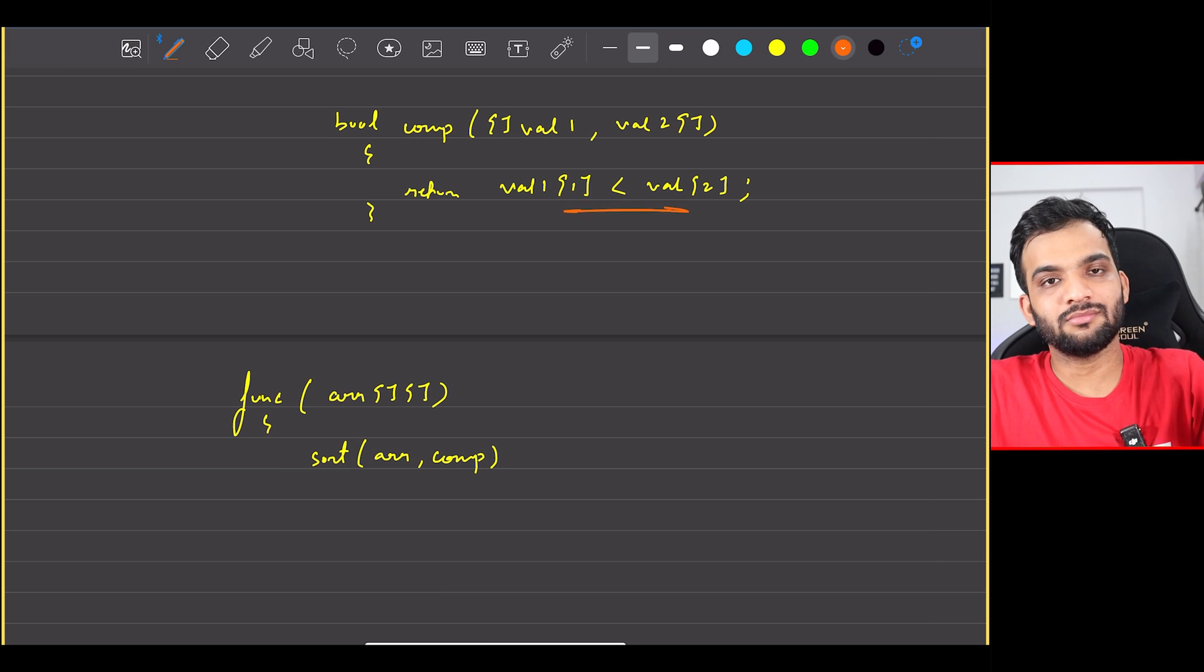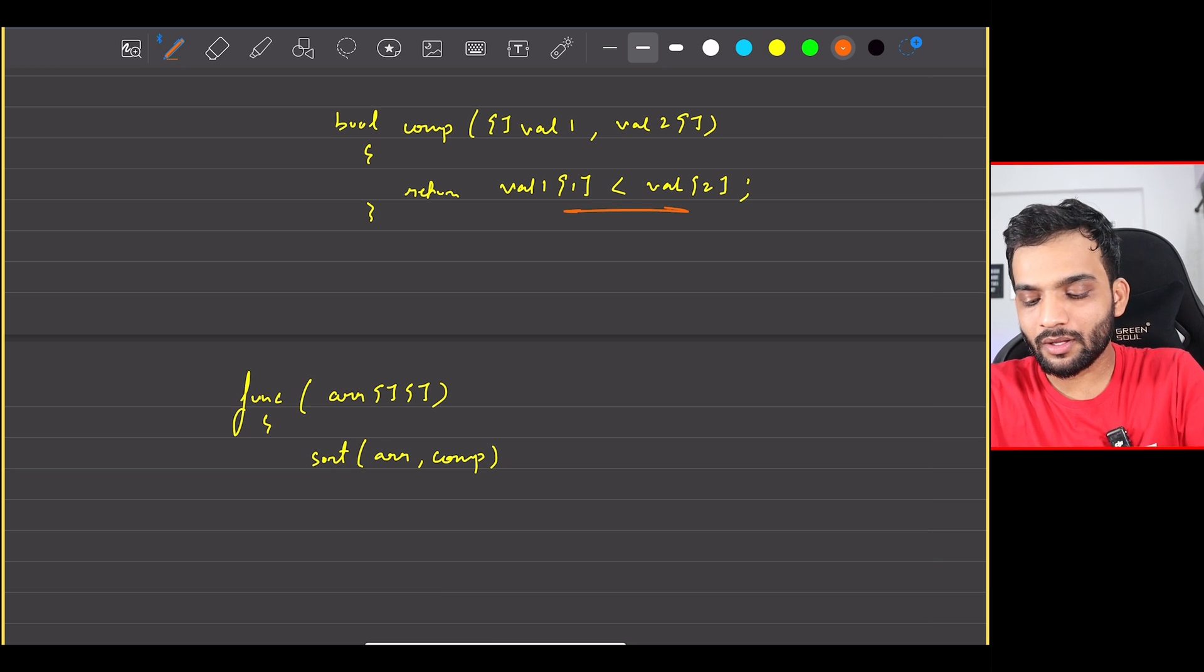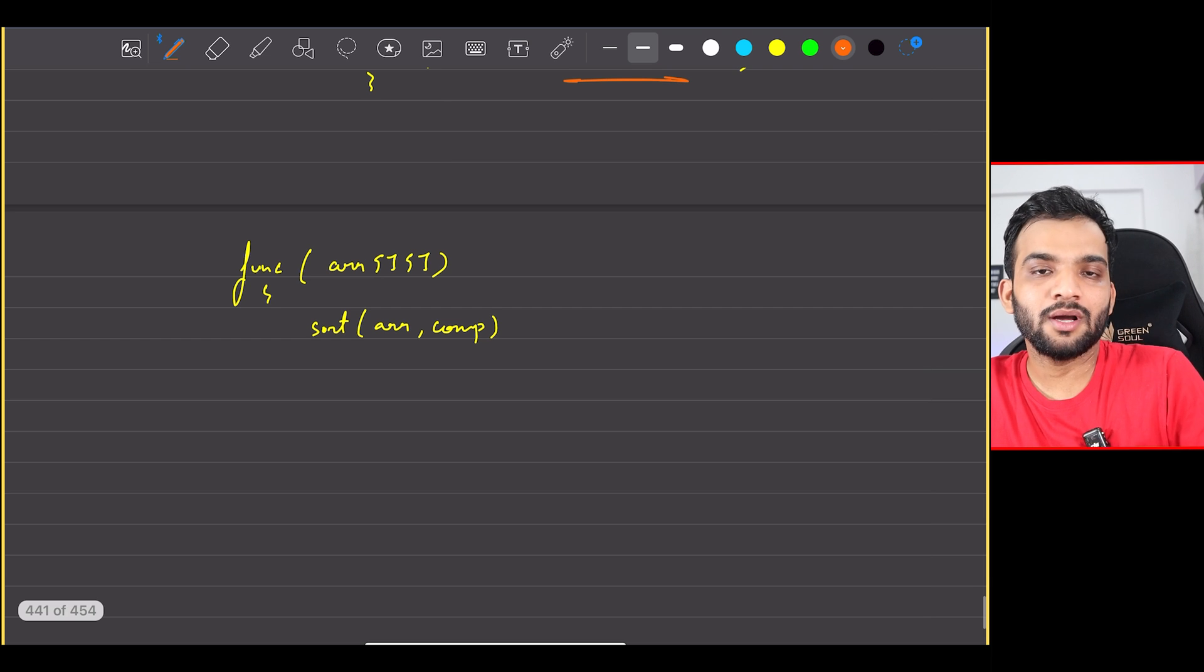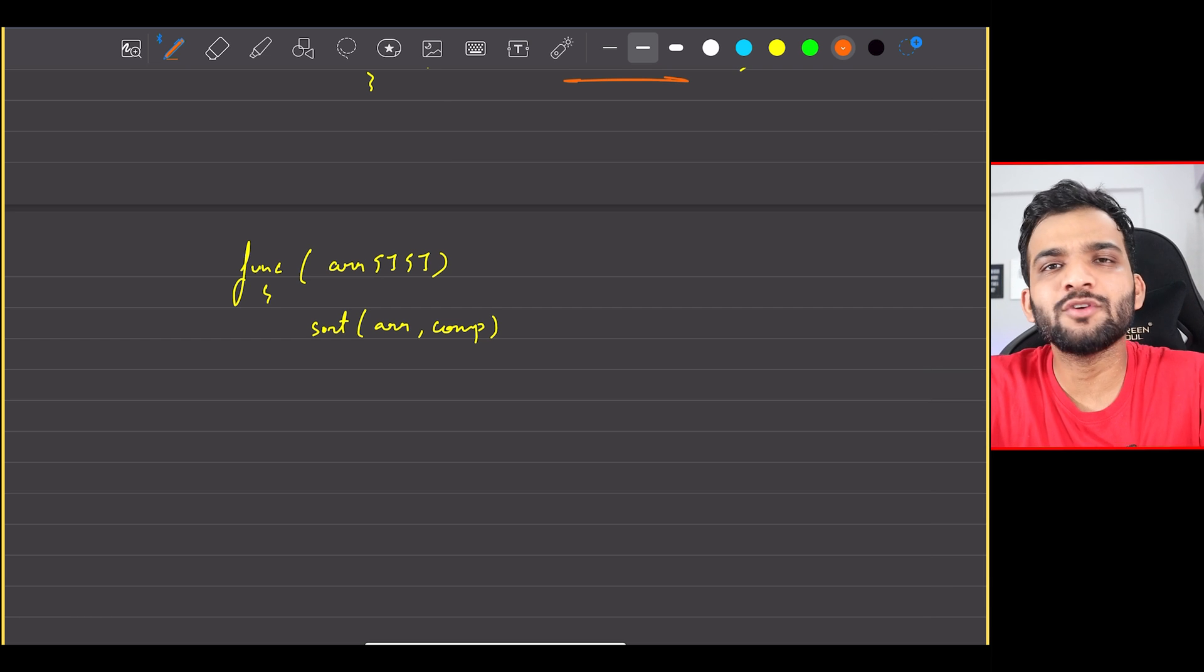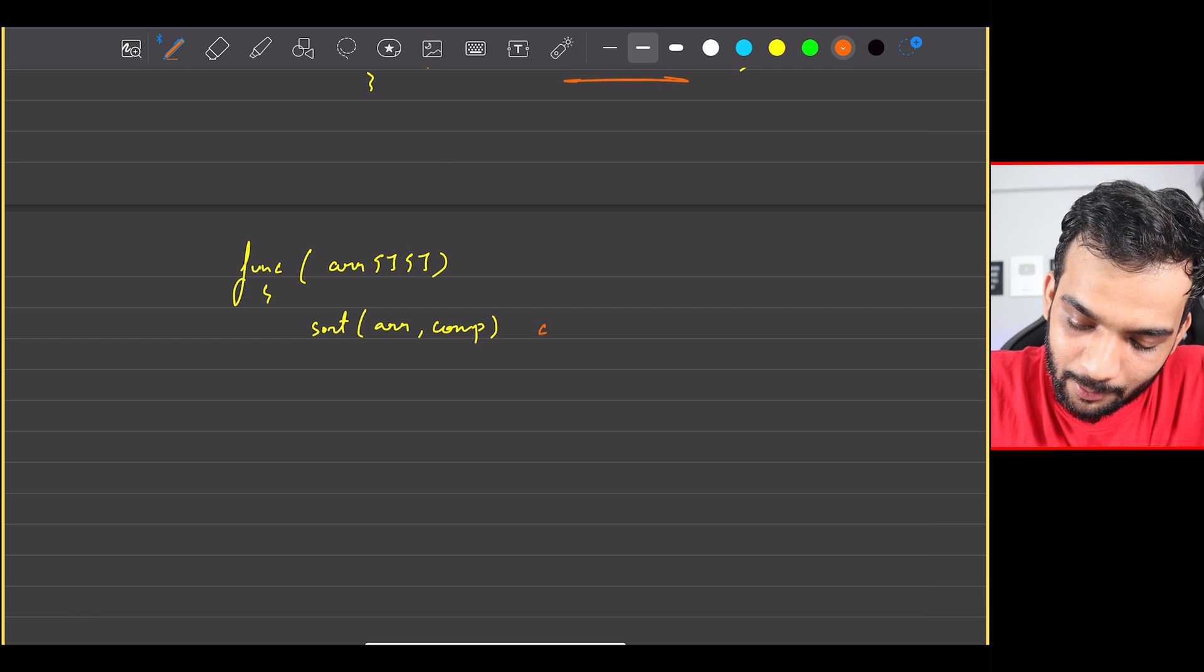Again, if you don't know how to write comparators, my STL video - we explain comparator in depth over there. Perfect. Sort array comma comparator's then understood.